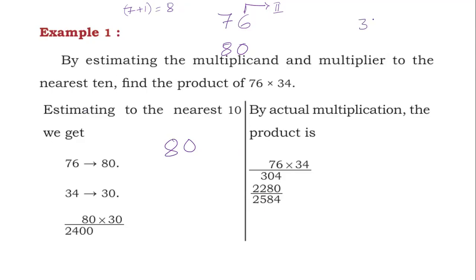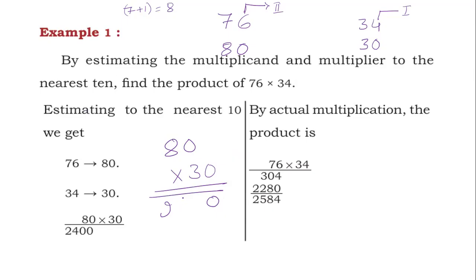Estimation of 34: unit digit is 4 — first case. Put 3 as it is and put 0 in unit place. Estimation of 34 is 30. Now multiply: 80 × 30. 30 × 0 = 0, 30 × 8 = 24, so 30 × 80 = 2400. The answer is 2400.